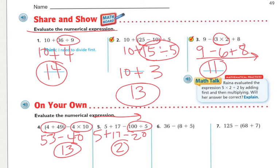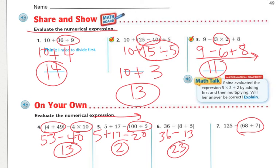Next problem has parentheses, so do that first: eight plus five is thirteen. Bring down minus and thirty-six: thirty-six minus thirteen is twenty-three. Next: one twenty-five minus parentheses sixty-eight plus seven. Do parentheses first: sixty-eight plus seven is seventy-five. One hundred twenty-five minus seventy-five is fifty.